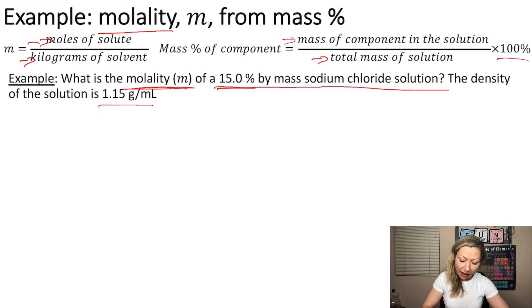So what does it mean to have a 15% by mass sodium chloride solution? This means that if we have 100 grams of the solution, out of that 100 grams, we are going to have 15.0 grams of sodium chloride.